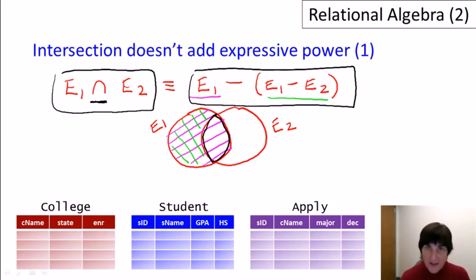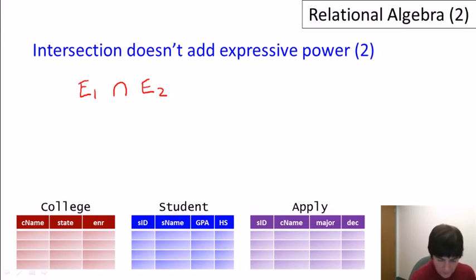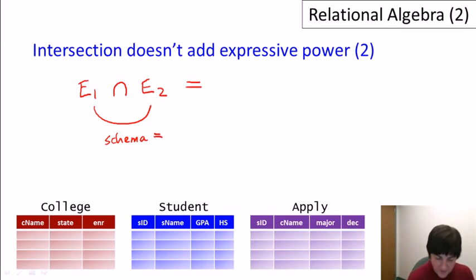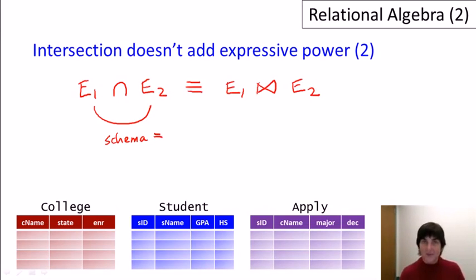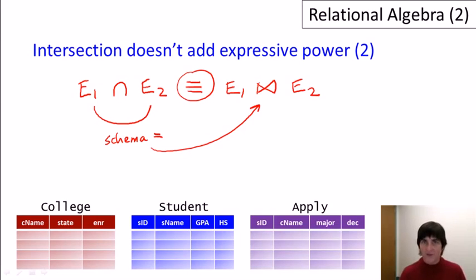A completely different way to see that intersection doesn't add expressive power: E1 intersect E2 is exactly the same as E1 natural join E2 when both have the same schema. Natural join matches up all equal columns and eliminates duplicate values of columns, so that's a second reason intersection doesn't add expressive power. Nevertheless, intersection can be very useful in queries.